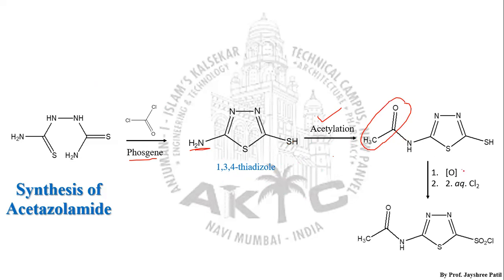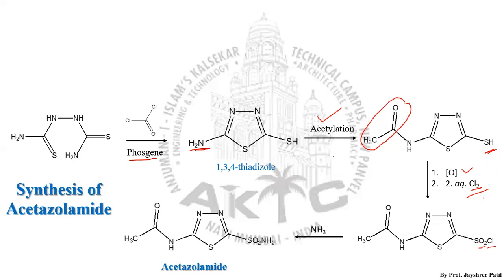This acylated product is then followed by oxidation in the presence of acyl chloride. The SH group undergoes oxidation — oxygen is present and in the presence of Cl₂, the sulfonyl chloride is formed, replacing the SH group. Then, when this moiety is treated with ammonia, there is simple substitution of the chlorine with NH₂, converting sulfonyl chloride into sulfonamide.